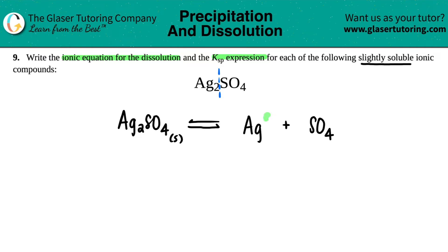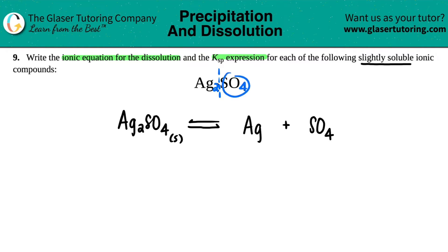Now we need the charges. If we're going to break this down into its ions, all ions need charges. We use the crisscross method. So I have two silvers, and remember this four is part of the polyatomic, so I really have only one sulfate. This two crisscrosses up telling me that the sulfate was a negative two, and this one crisscrosses up telling me that the silver was a plus one. So Ag is plus one and the sulfate is negative two. We know that these are going to be aqueous, and now we just have to make sure we have a balanced equation. There were two silvers, so I have to put a two in front of the Ag. But for the sulfate, there was only one sulfate.